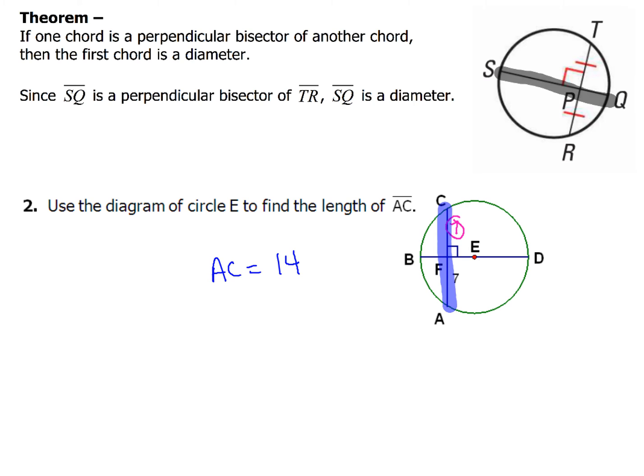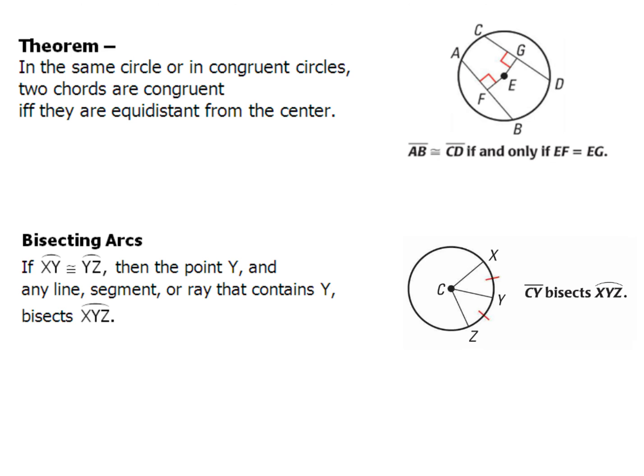Two other theorems coming at you. First one is going to talk about in congruent circles, two chords are congruent if and only if they are equidistant from the center. Those two parts are going to be equal if AB and CD are congruent. If those two things are the same, then EF and EG are going to be the same thing. That's what that word equidistant means, it's going to be the same distance from the center of this circle, which in this case is E.